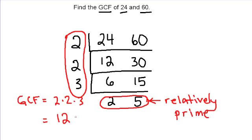So the GCF of 24 and 60 is 12, or in other words, the largest number that divides evenly into both 24 and 60 is 12.